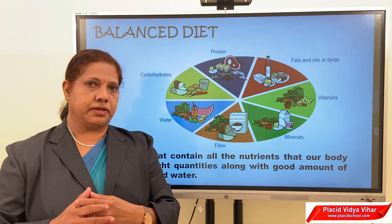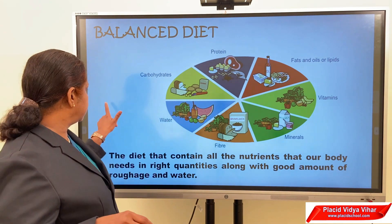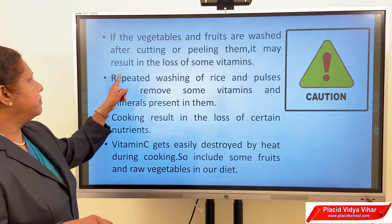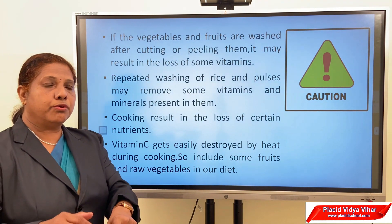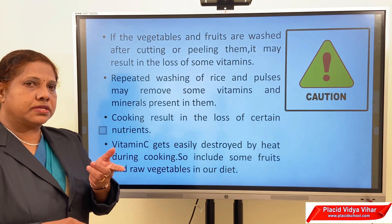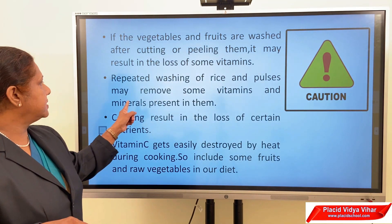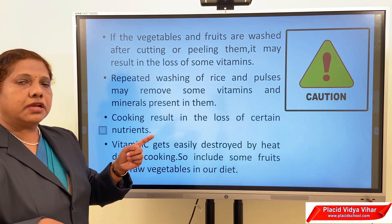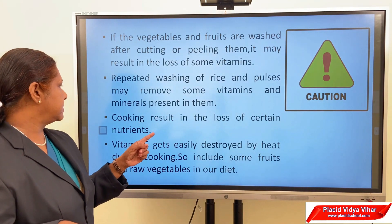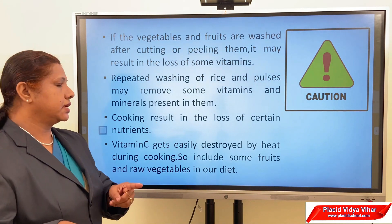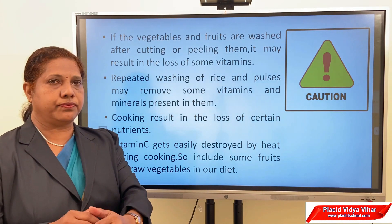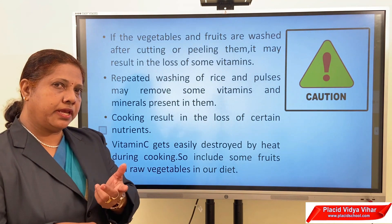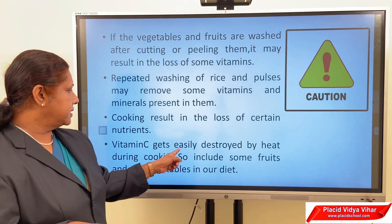Is eating the right kind of food enough? During cooking and preparation, some nutrients may be lost. If vegetables and fruits are washed after cutting or peeling, it may result in the loss of some vitamins. So wash vegetables before cutting, not after. Also, repeated washing of rice and pulses may remove some vitamins and minerals. Cooking itself also results in the loss of certain nutrients, even though it improves taste and makes food easier to digest.